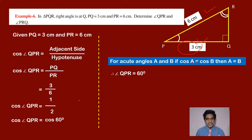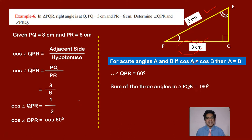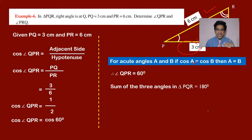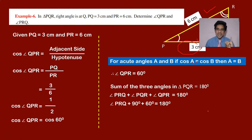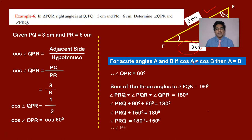We already have angle Q equal to 90 degrees and now we have QPR equal to 60 degrees. The remaining angle PRQ can easily be found. Since the sum of three angles in a triangle is 180 degrees, angle PRQ plus angle PQR plus angle QPR equals 180. Substituting: angle PRQ plus 90 plus 60 equals 180. Therefore angle PRQ equals 180 minus 150, which is 30 degrees.